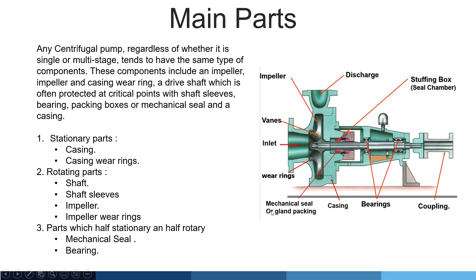Now we will see the main parts of the centrifugal pump. You can see in the pictures. Some of the main parts are impeller, casing, bearing, coupling, mechanical seals and clamp backing, inlet, bearing, discharge and suction head. Any centrifugal pump, regardless of whether it is single or multi-stage, tends to have the same type of components. These components include an impeller, casing, bearings, a drive shaft which is often protected with shaft sleeves, packing box or mechanical seal, and a casing. The parts can be divided into three types: stationary parts, rotating parts, and parts which are half stationary and half rotating.